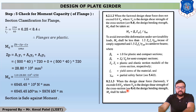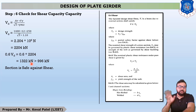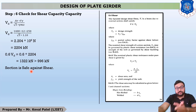The final answer is determined using page number 53, which states that V must not exceed 0.6 × VD. Multiplying by 0.6 gives 1322 kN, which is much greater than the maximum reaction of 996 kN. Our section is safe against shear force.